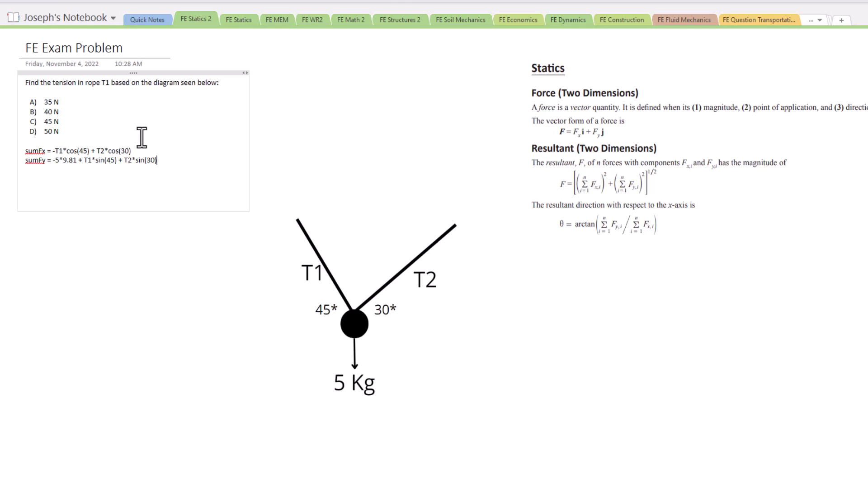These are both of our equations. Now we have two equations, and we have two unknowns. That means we can solve for the unknown that we're looking for. Okay, two equations, two unknowns.